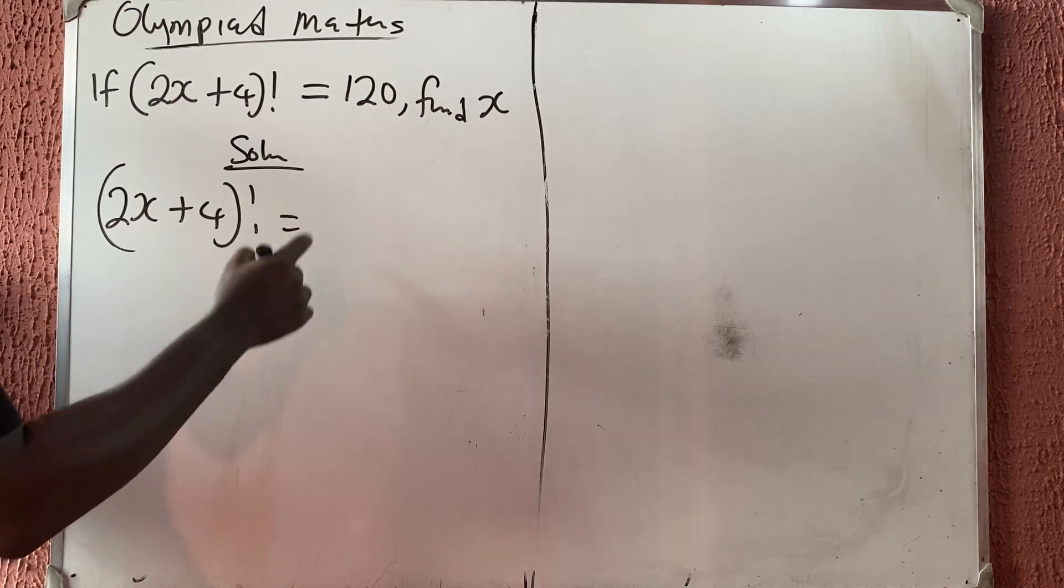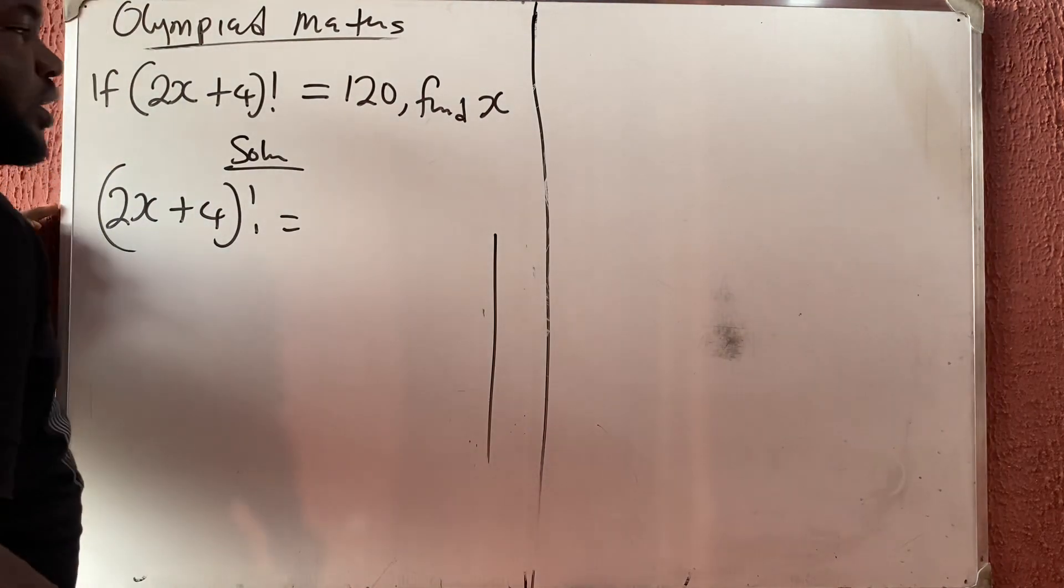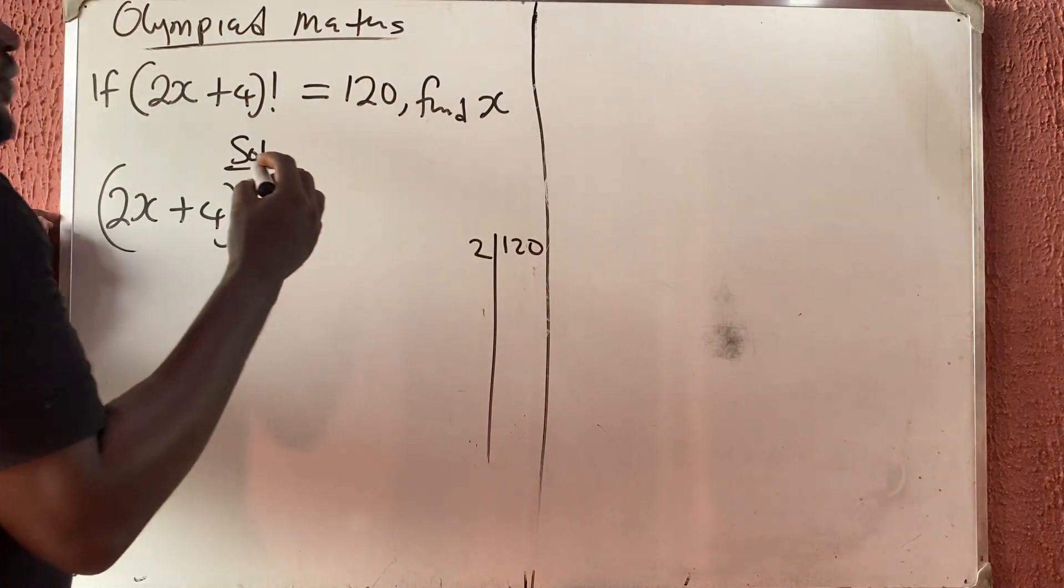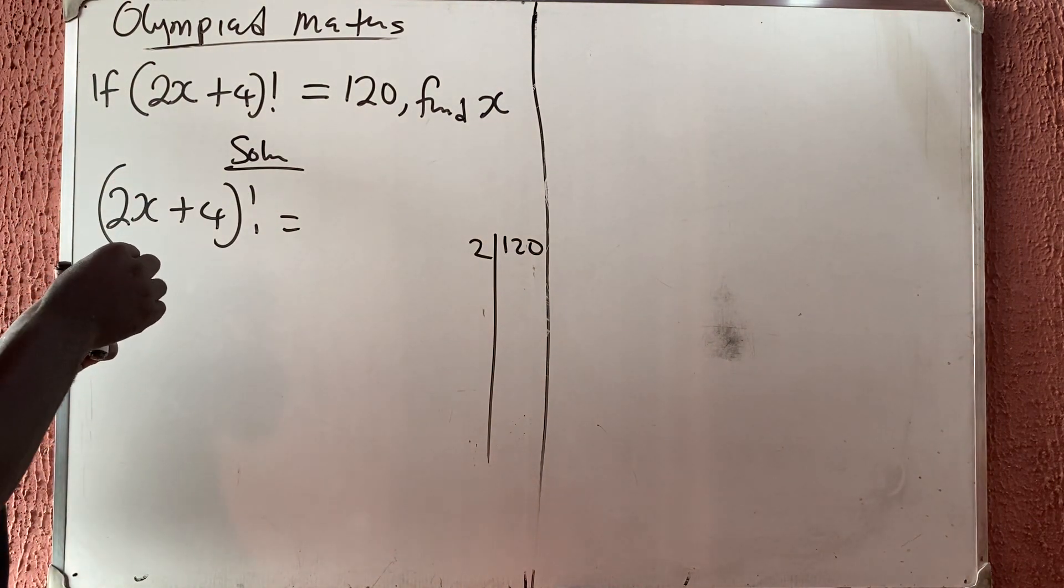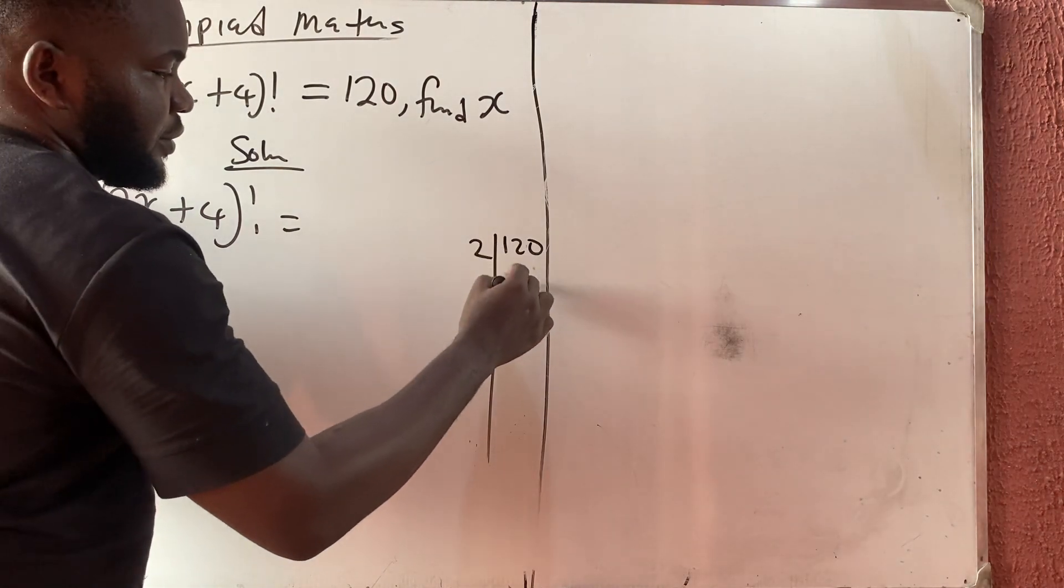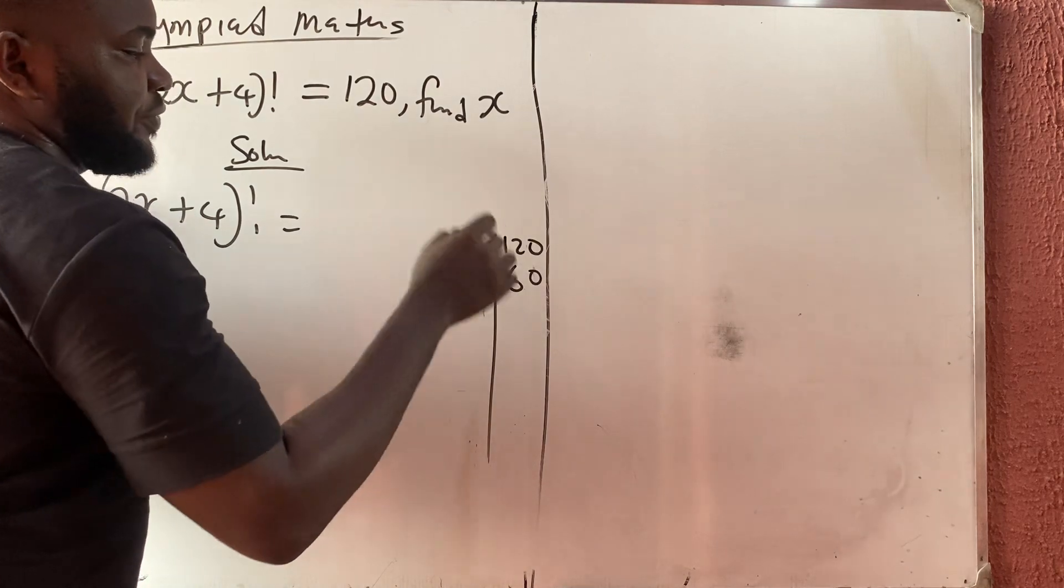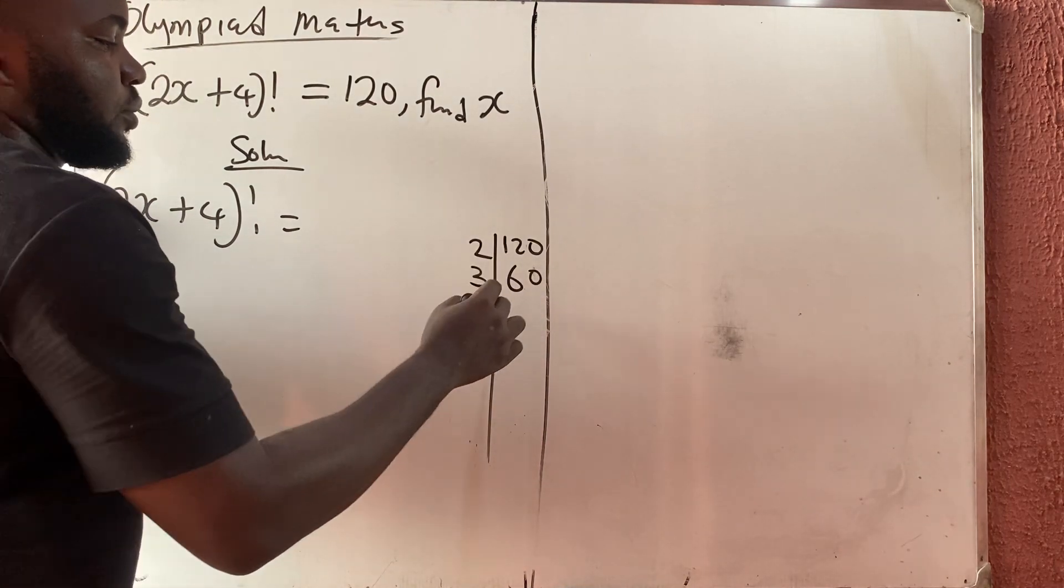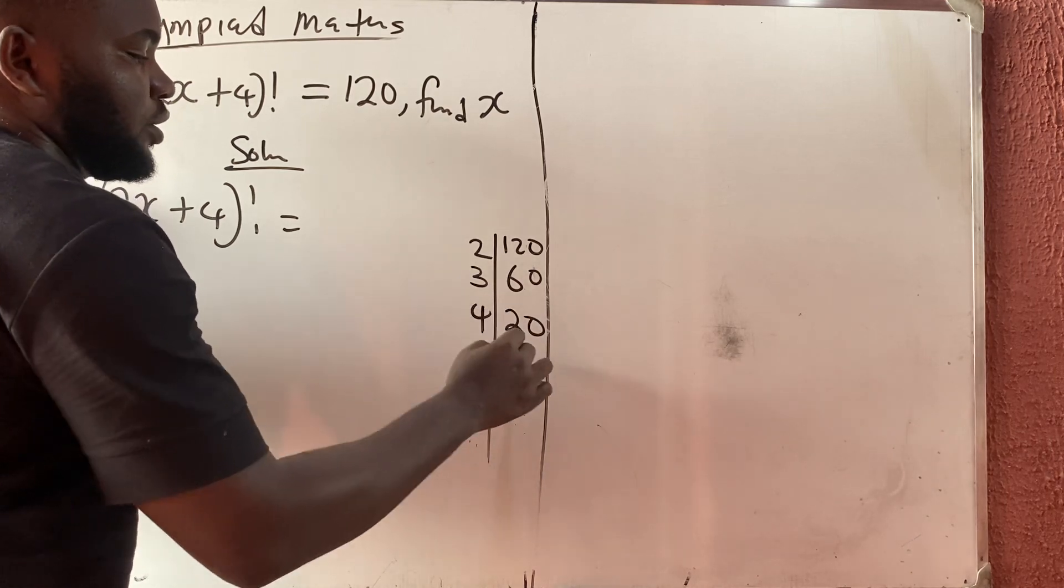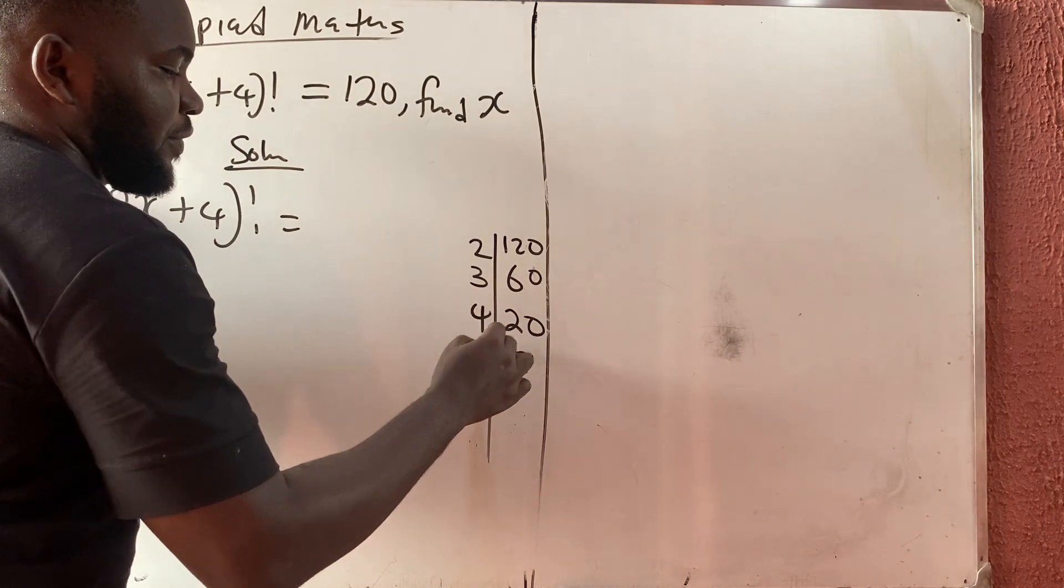Now 120 is something as 5 factorial, but if you don't know, let us do this. 2 divides 120, I'm going to have 60. 3 divides 120, I'm going to have 40. 4 divides 120, I'm going to have 30.